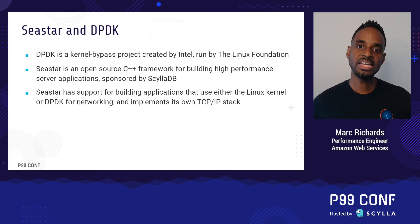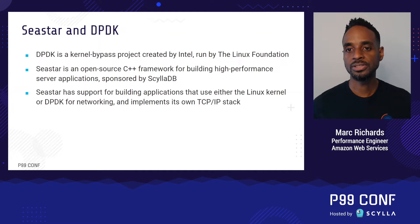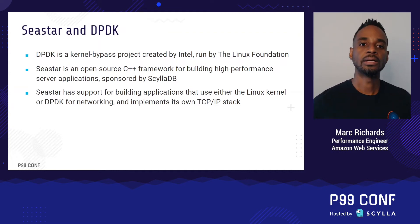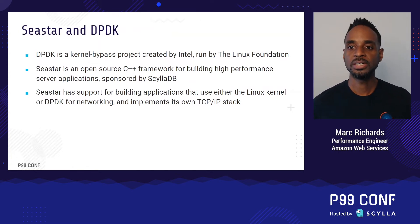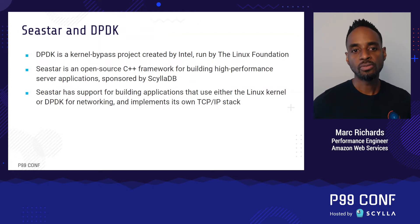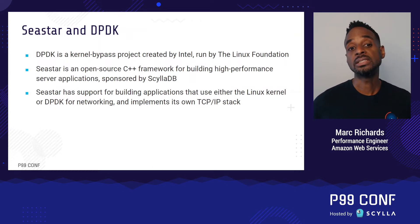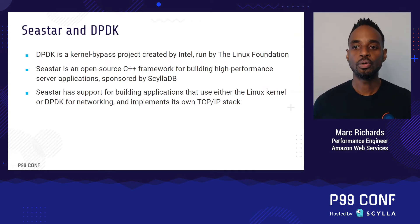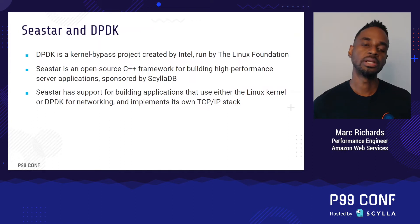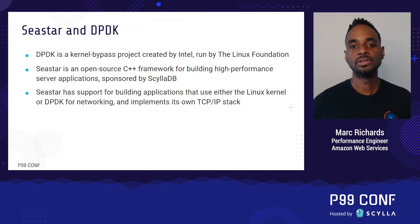I'm going to use a simple HTTP benchmark to do a head-to-head performance comparison between the Linux kernel's networking stack and a kernel bypass stack powered by DPDK. DPDK is a popular kernel bypass project created by Intel in 2010 and donated to the Linux Foundation in 2017. I'm going to run my tests using C-Star, which is an open-source C++ framework for building high-performance server applications sponsored by ScyllaDB. C-Star supports building apps that use either the Linux kernel or DPDK for networking, and it implements its own TCP/IP stack when running in DPDK mode — making it a perfect framework for this type of direct comparison.